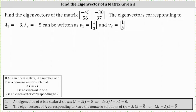We want to find the eigenvectors of the given 2 by 2 matrix. The eigenvectors corresponding to lambda sub 1 equals negative 3 and lambda sub 2 equals negative 5 can be written as vector v sub 1 equals the vector 1a and vector v sub 2 equals the vector 1b. The eigenvectors of matrix A corresponding to lambda are the non-zero solutions to the equation where we have the difference of matrix A and the product of lambda and the identity matrix times vector x, the eigenvector, equals the zero vector.